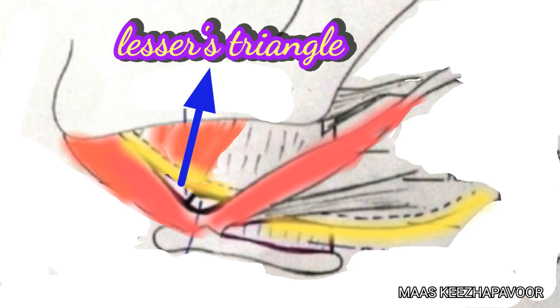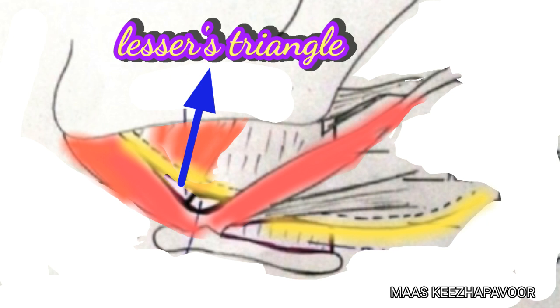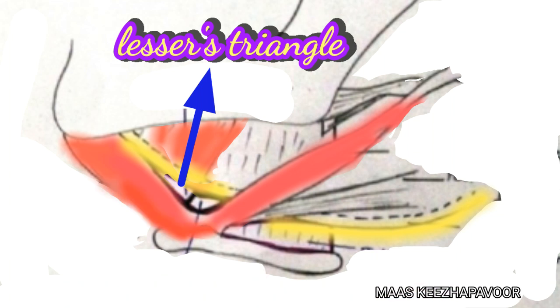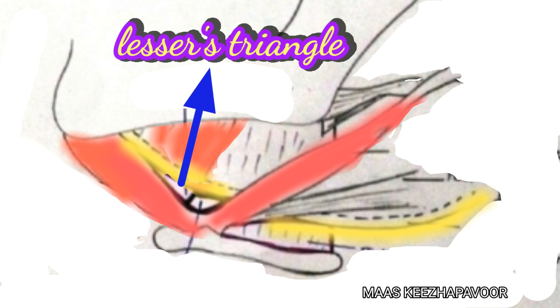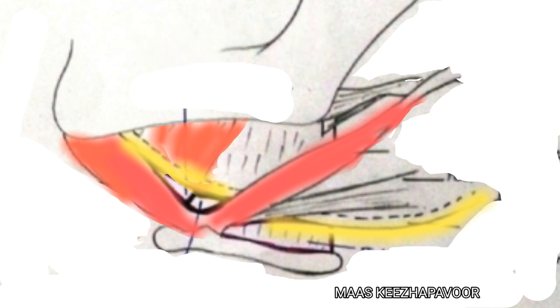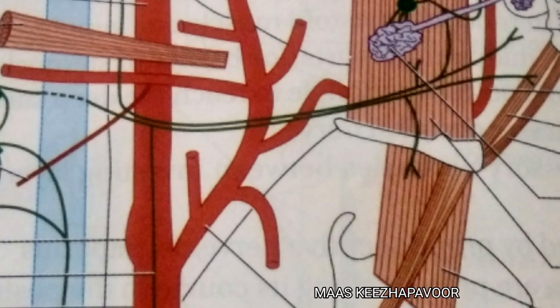Lesser's Triangle is a triangle present within the submandibular triangle, named after a German surgeon named Ladislaus Leon Lesser. The inferior boundary is formed by the anterior belly of digastric and intermediate tendon of digastric. The superior boundary is formed by the hypoglossal nerve. The posterior boundary is formed by the posterior margin of mylohyoid muscle. The floor is formed by hyoglossus and mylohyoid muscle. The lingual artery is present deep to the hyoglossus muscle in Lesser's Triangle.